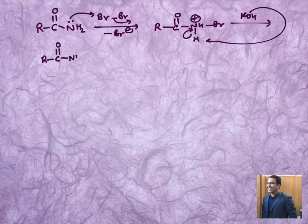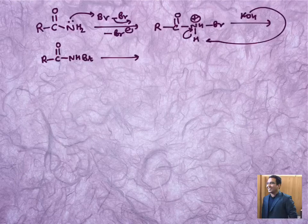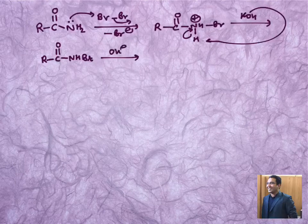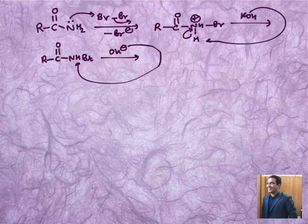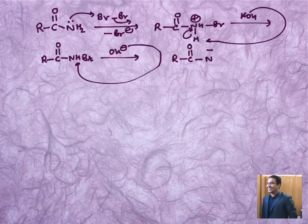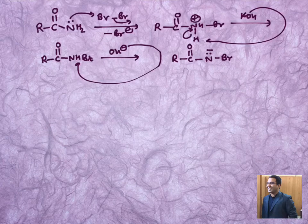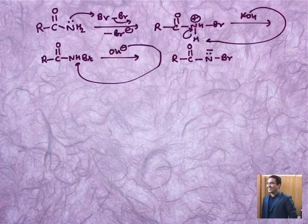If it takes this base, what will happen to this position? It becomes R-C double bond O-NH-Br. Later with the base OH minus, this H is also to be picked up which can create formation of R-C double bond O-N minus with bromine attachment.